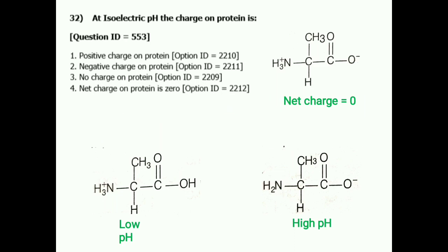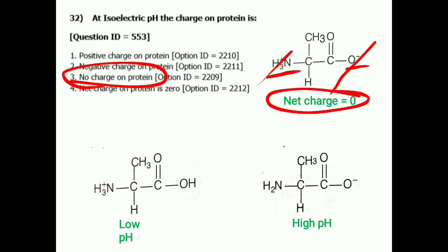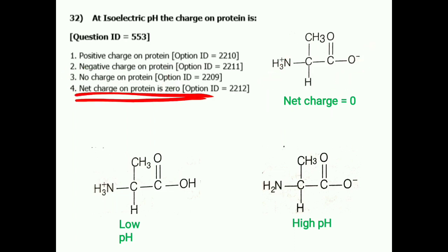Now, in this question we talk about isoelectric pH. Isoelectric pH means the pH at which the particular amino acid or protein has a net charge equal to zero — the positive and negative charges are equal. So option 1 (positive charge) is not true, option 2 (negative charge) is not true, option 3 (no charge) is also wrong because the protein is charged but neutral. The correct answer for question 32 is option 4: net charge on protein is zero.